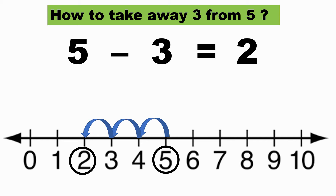It is very important to start with the first number. I cannot subtract starting with three — I need to start with five. So I start with five and jump three times to the left: one, two, three. One time brings me to four, two times brings me to three, three times brings me to two — which is the answer.